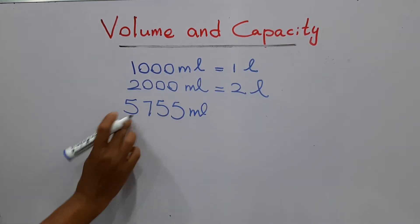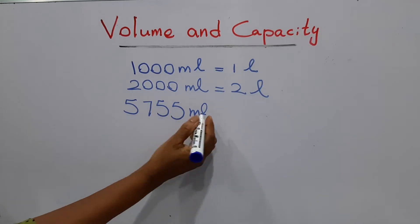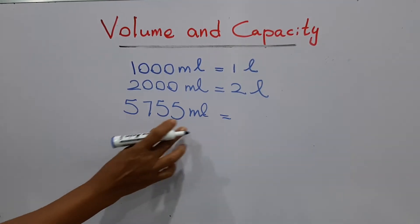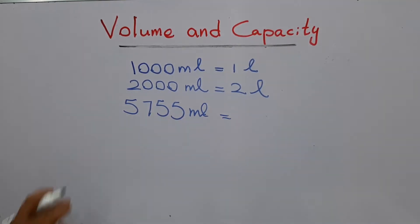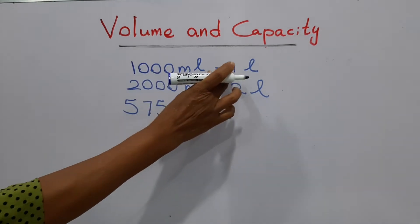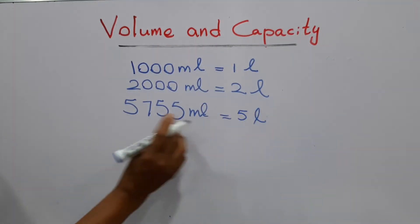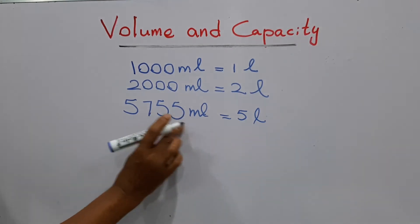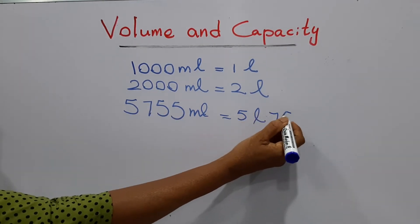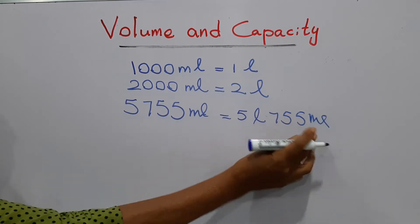What is this number? Five thousand seven hundred and fifty-five milliliters — asking to convert to liters and milliliters. Five thousand milliliters means how many liters? And how many milliliters remain? Seven hundred and fifty-five milliliters are left over.